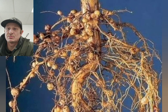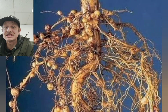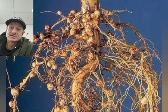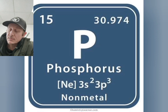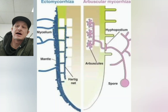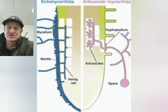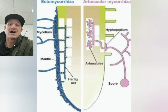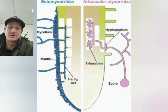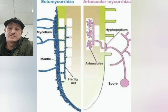You also have Rhizobium, which is known for nitrogen fixing, but some species also help with phosphorus solubilization. We all know about mycorrhizal fungi, and Trichoderma does this too — these extend their hyphae into the soil, acting as a secondary root system, pulling both water and phosphorus into the plant and delivering it directly to the root in exchange for carbon in the form of sugars.